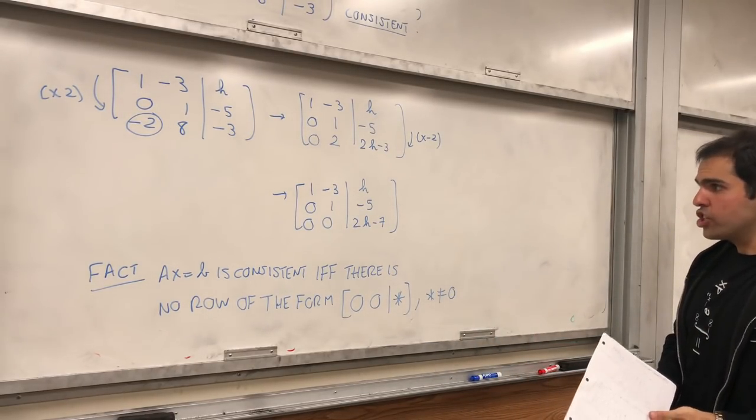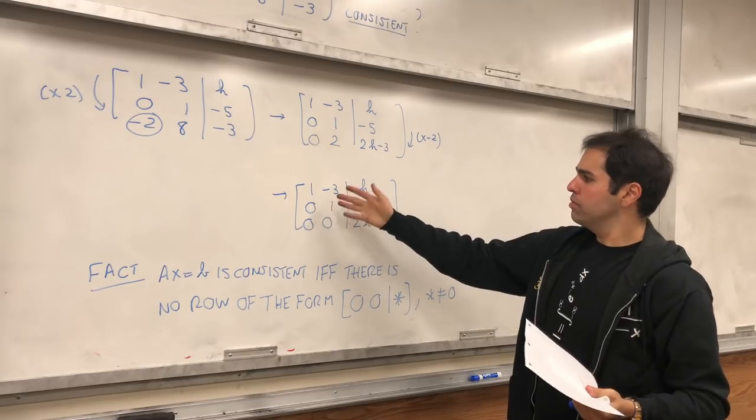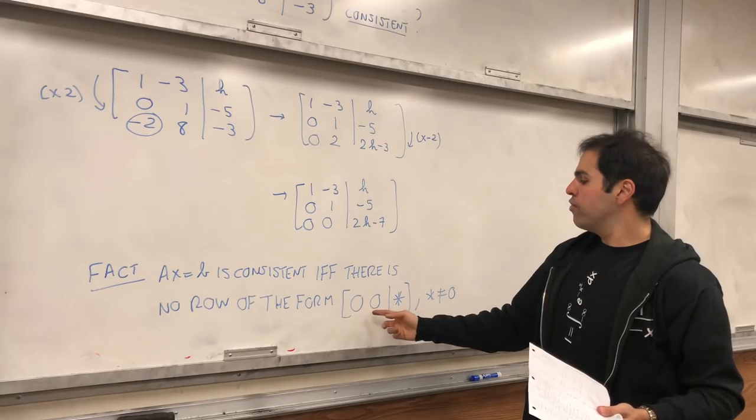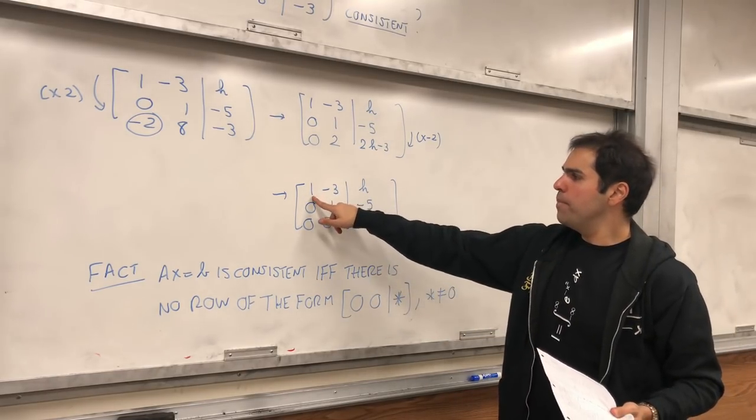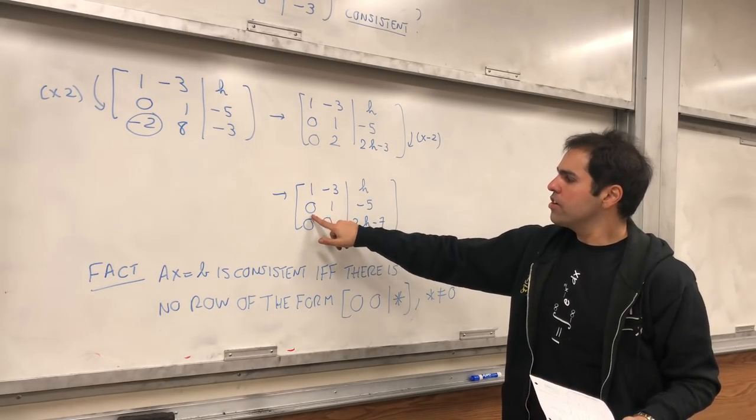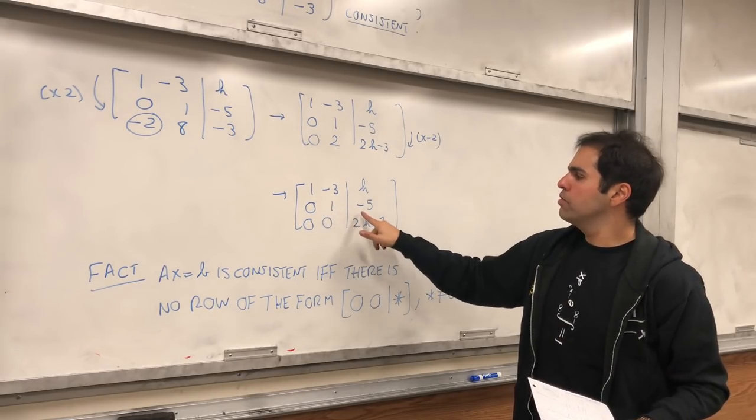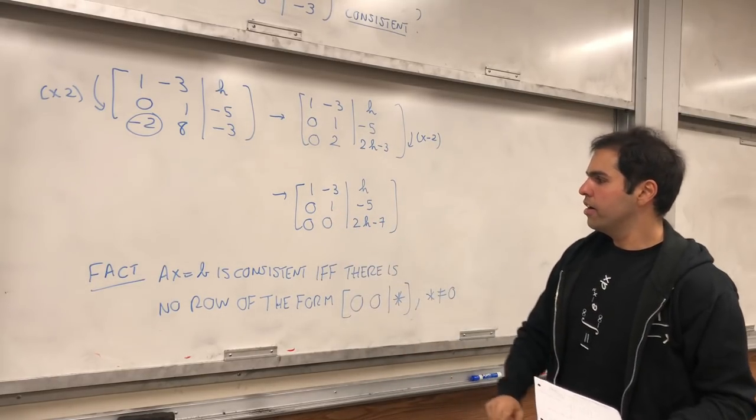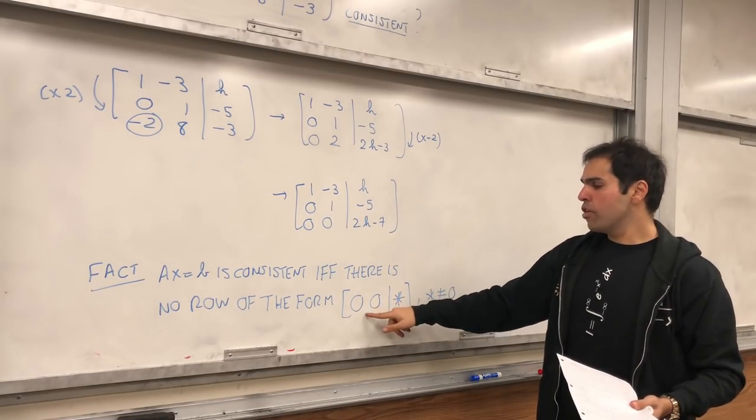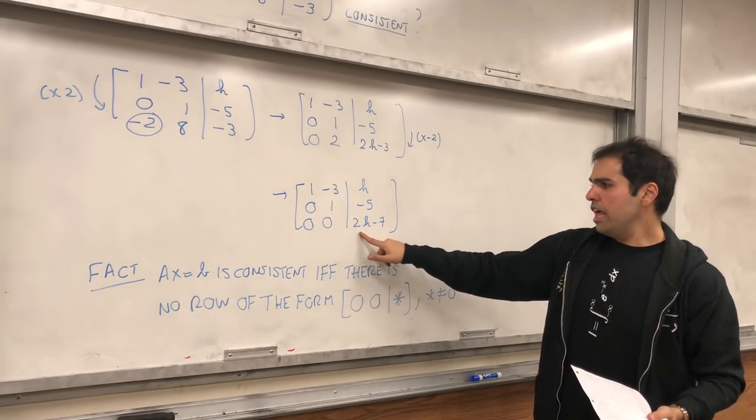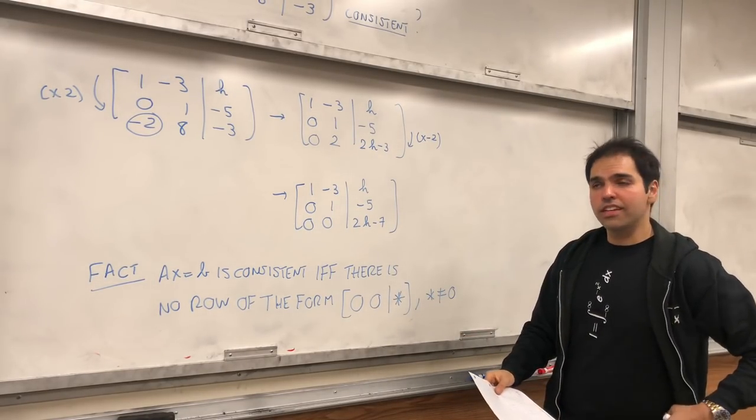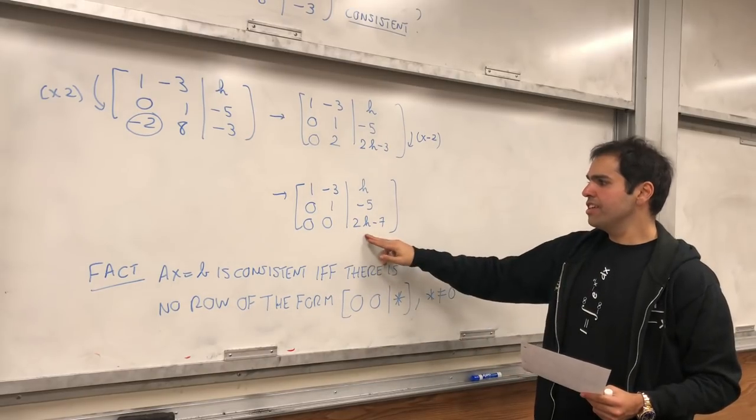Okay, so let's check. Well, this is row echelon form. The first row, well, it cannot be of the form [0, 0, something], because there's this one here. So that's good. The second row, there cannot be a row of the form [0, 0, something], because of this one here. And, well, let's see. The third row, well, it could be of the form [0, 0, something], if this is non-zero. So the only way the system is inconsistent is if this is non-zero.